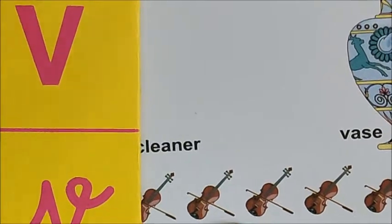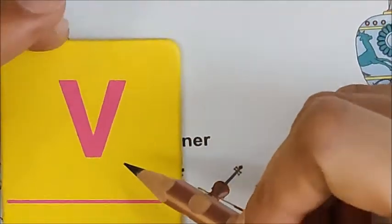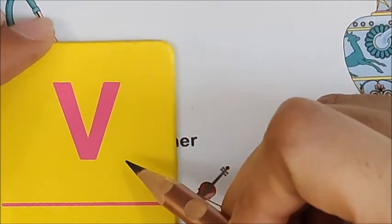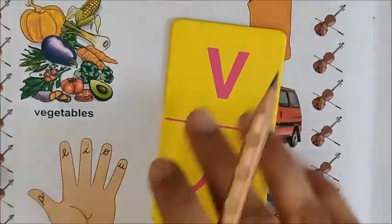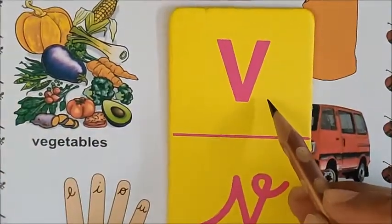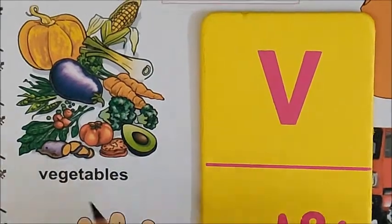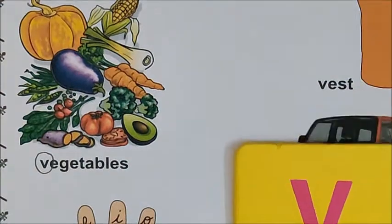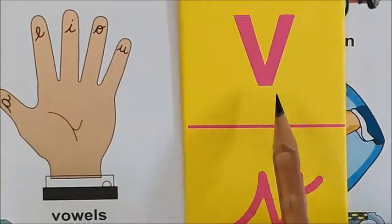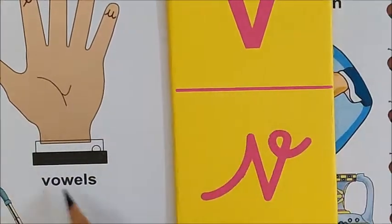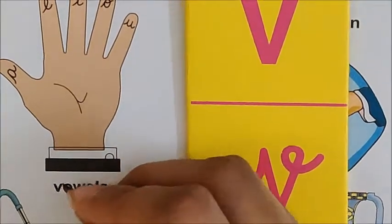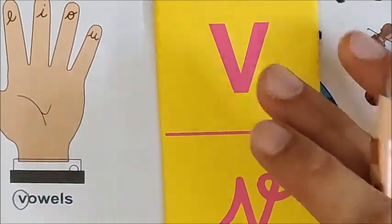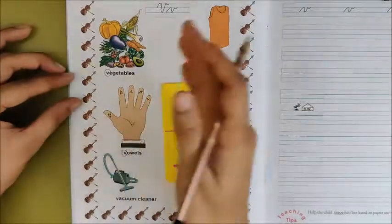Now it is time to look for V in print in all the words. Let us start with the first word — vegetables. Can you find the V in the word vegetables? Yes, it is here, so circle it. Now let us go to the next word — look for print V in the word vowels. I have found it and circled it. Like this, children, you have to look for print V in all the words.